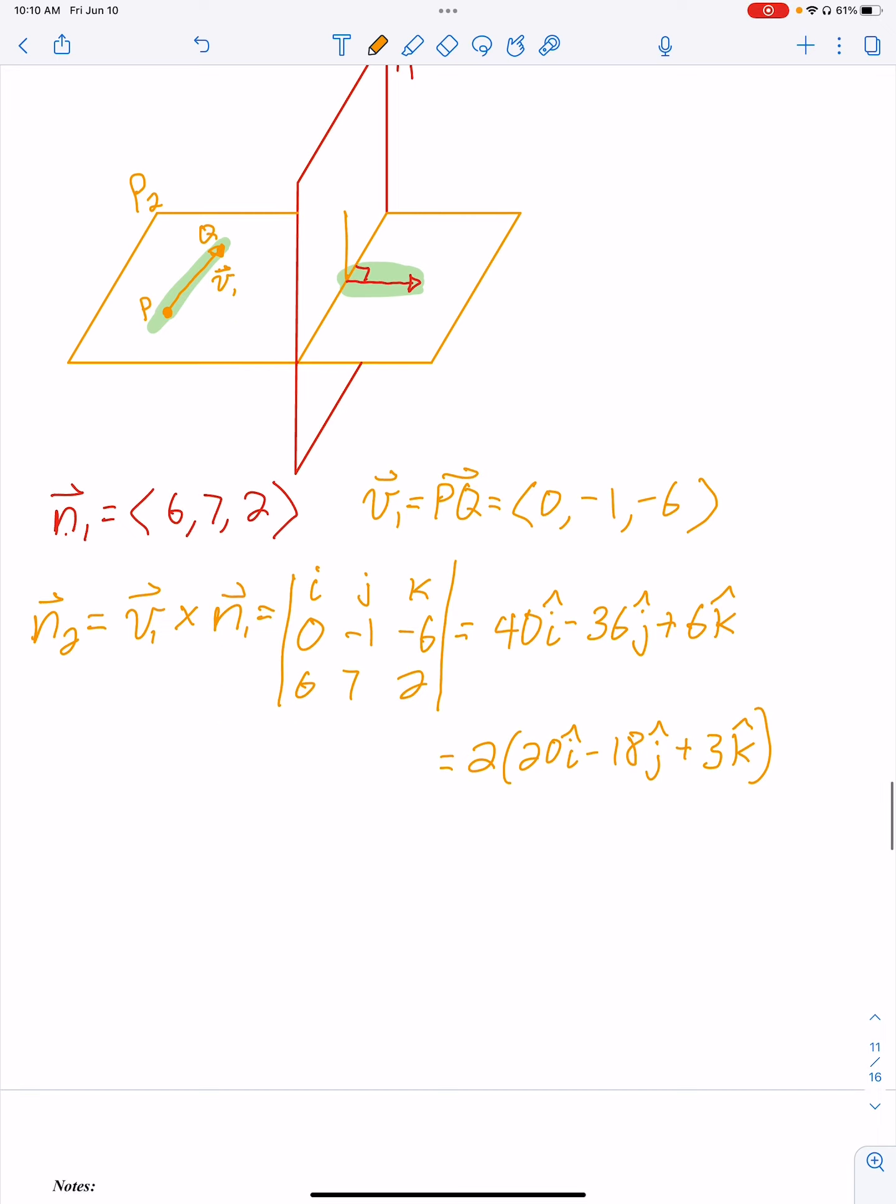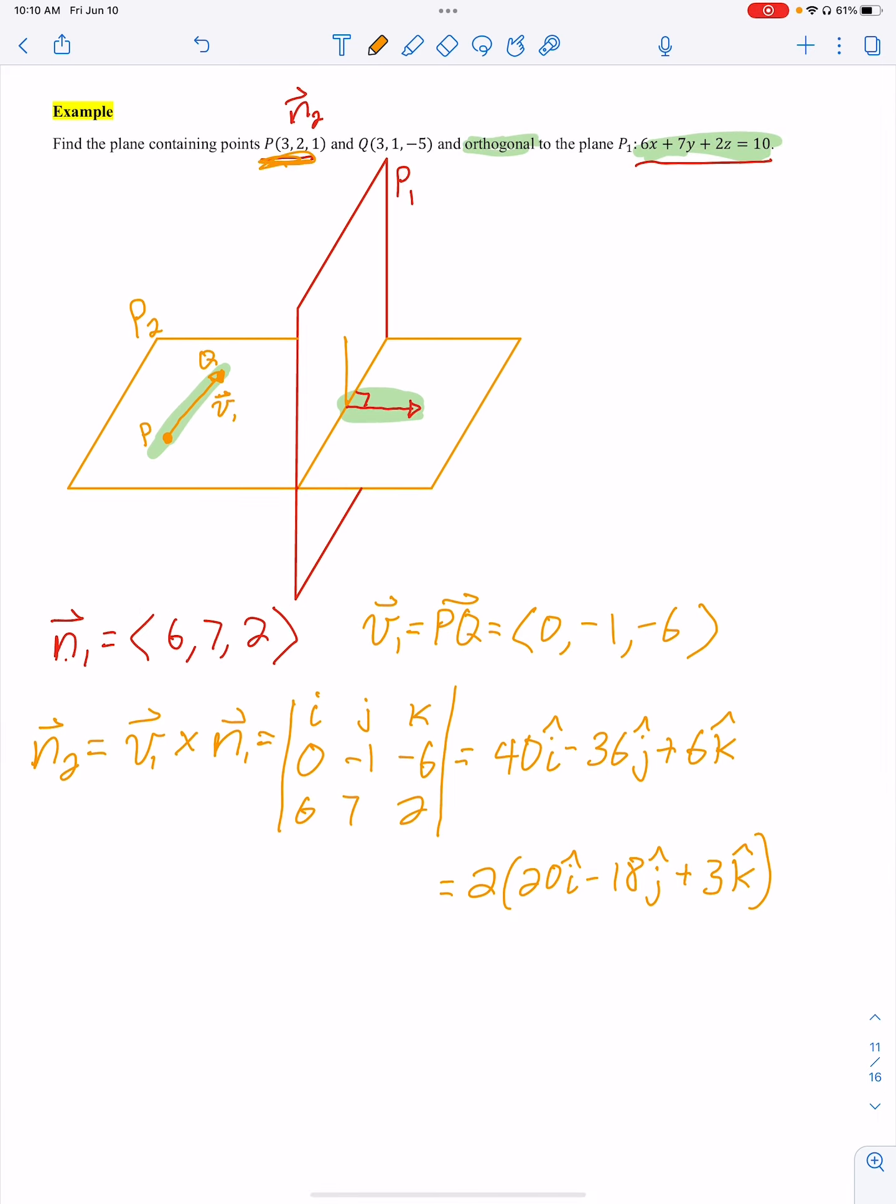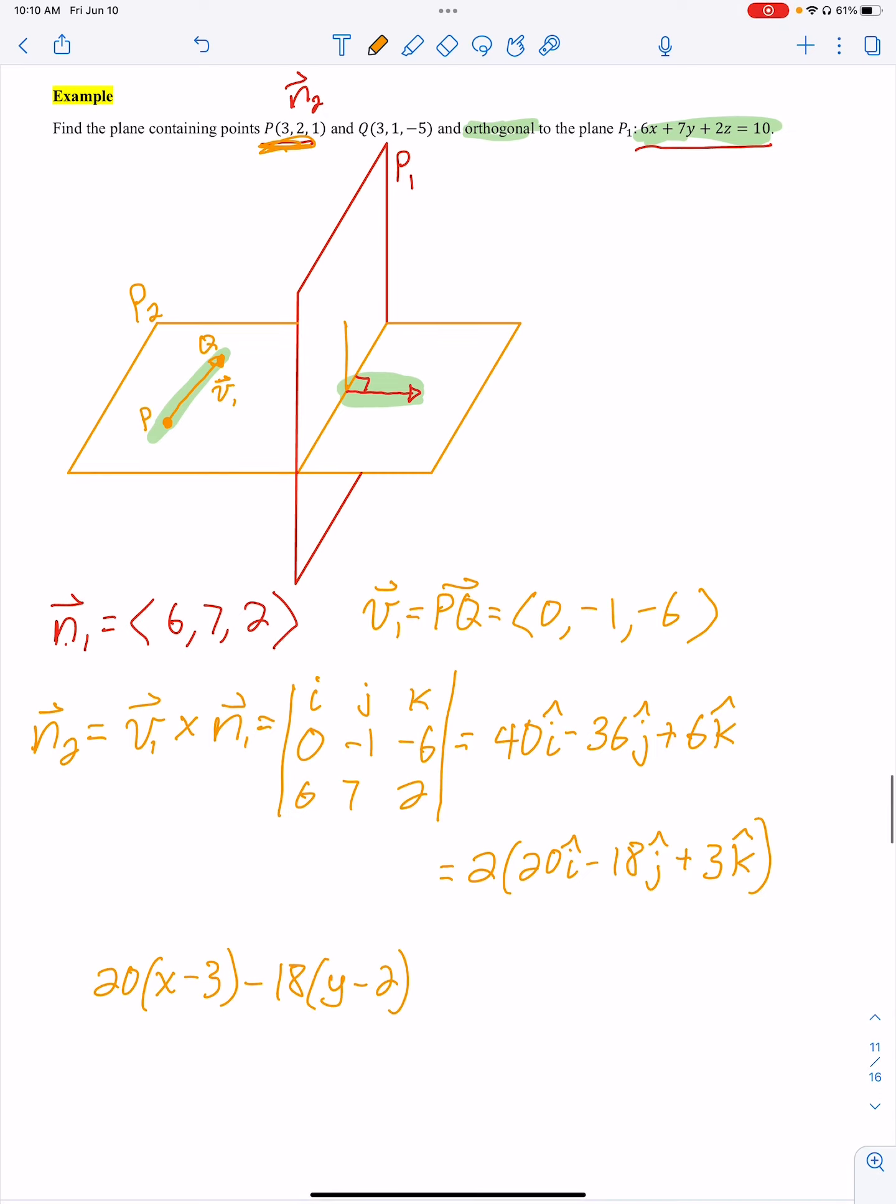So we are going to use the one inside along with this point. So for my equation of the orange plane there, P2, I have 20(x minus 3) minus 18(y minus 2). And then the last one is going to be plus 3(z minus 1). This is standard form.